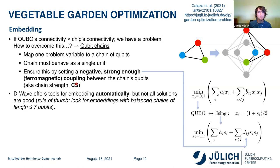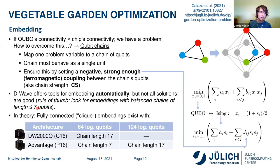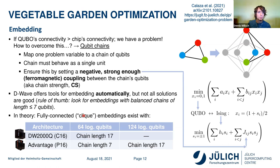From our experience, if an embedding has chains — one problem variable to several qubits — with more than seven qubits, there might be problems. In theory, fully connected problems called cliques can be embedded with 64 logical qubits on the old system with chains of length 17. By our guidance, this would or might not work well. But on the new chip, a 64-variable fully connected problem can be embedded with chains of length 7. This is what the improved connectivity suggests. Now let's look at results: garden problems with variables from 16 to 100. The new Advantage system was able to solve 100-variable problems where the old system struggled.